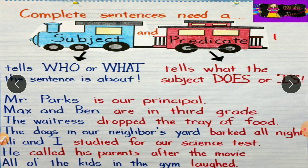Third example: 'The waitress dropped the tray of food.' Whom we are talking about? The waitress — that is the subject. What we are talking about the subject — 'dropped the tray of food' — that is the predicate. Next: 'The dogs in our neighbor's yard barked all night.' We are talking about 'the dogs in our neighbor's yard' — that is the subject. What we are talking about them — 'barked all night' — that is the predicate.